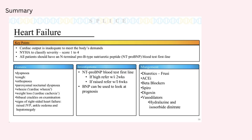Left-sided heart failure is going to present with pulmonary congestion because the blood is backing up into the heart, and right-sided heart failure is going to present with more systemic findings — sacral and peripheral oedema, raised JVP, and cardiomegaly.